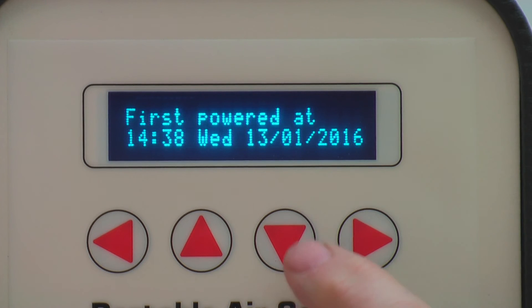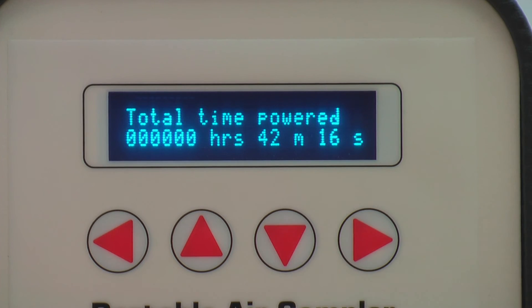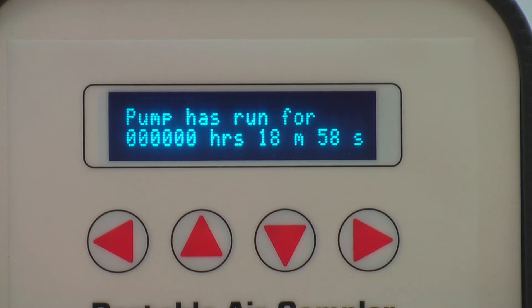You can see a range of important operating information if you press the down arrow repeatedly. These include total time powered, pump run time, and last calibration date.